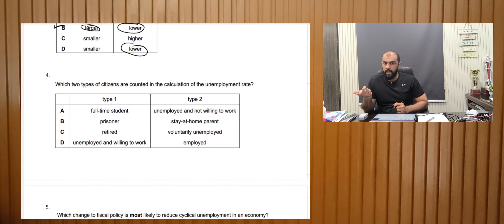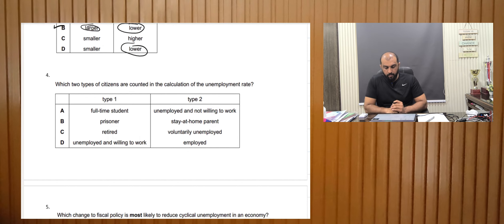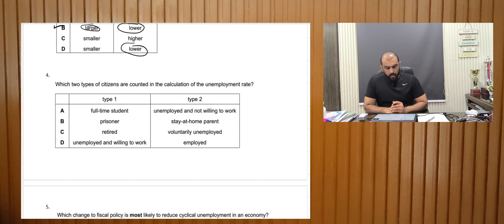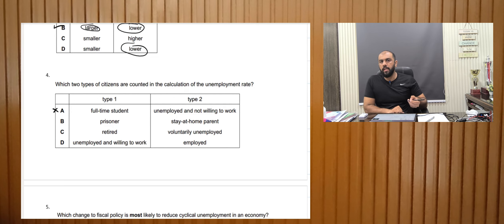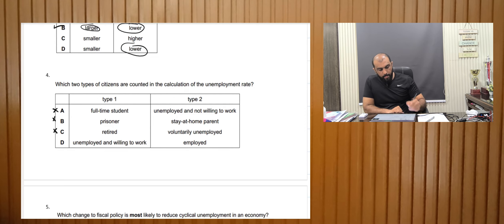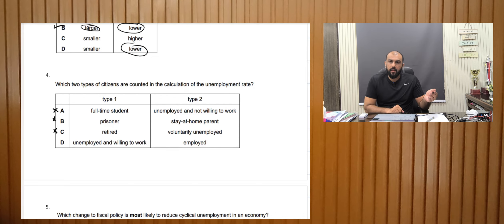Which two types of citizens are counted in the calculation of unemployment rate? The formula is: unemployed divided by the labor force (employed plus unemployed). A full-time student is a dependent person, not unemployed. A prisoner is willing to work but unable to. A retired person is excluded. By looking at type one alone, options A, B, and C cannot be the answer, so D is correct.